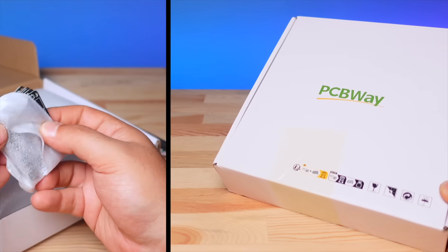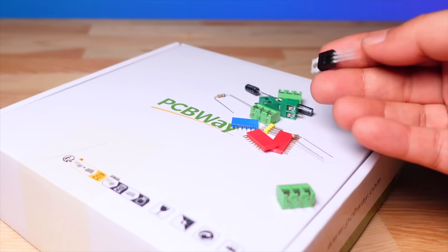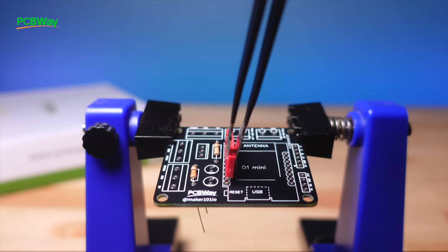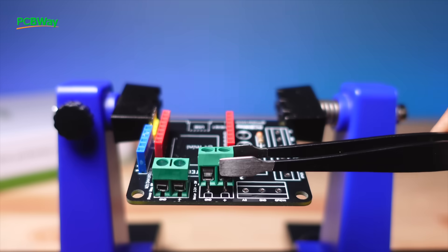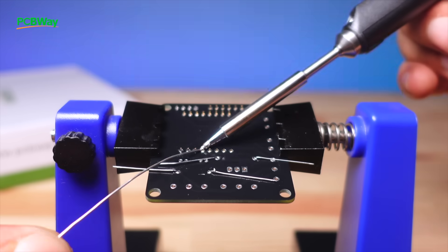Once the printed circuit board is delivered, the necessary components are prepared and the soldering process begins. The components are placed on the board according to the shared reference designator and then fixed with a soldering iron and soldering wire.